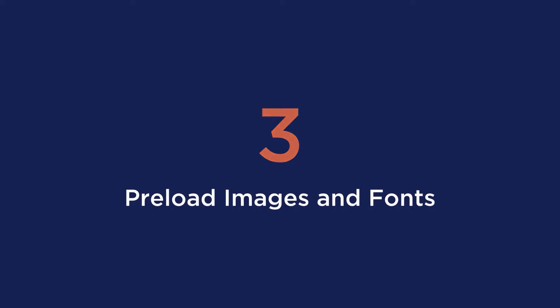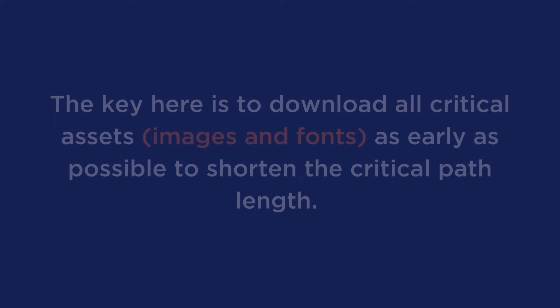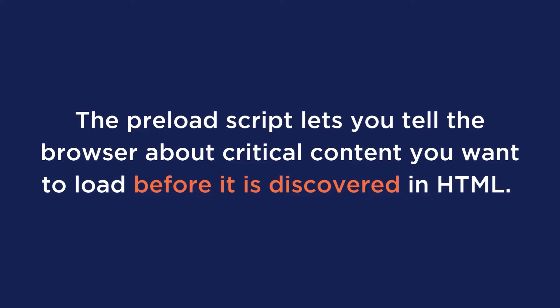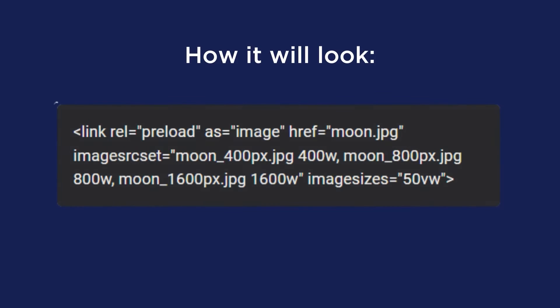Third is to preload images and fonts. The key here is to download all critical assets — images and fonts — as early as possible to shorten the critical path length. The preload script lets you tell the browser about critical content you want to load before it is discovered in the HTML. To preload images, apply this script on them, and this is how your HTML looks with a preloaded responsive image. The easiest way to handle this is with WP Rocket, where all it takes is just a few clicks.